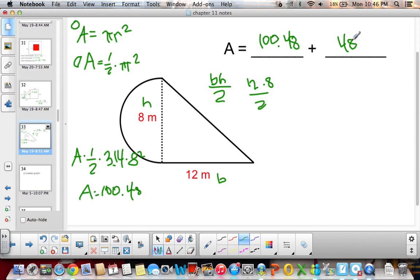So 100.48 plus 48 equals 148.48 meters squared. So it's really important that you break it up into figures that you know how to find the area of, and then to make sure that you're using the correct formula to find the area of that figure.